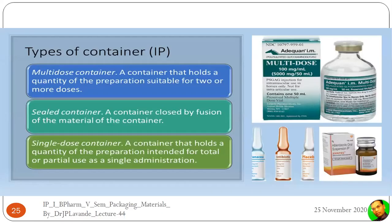The multiple dose container holds a quantity of preparation suitable for two or more doses — for example, injectable vials, where multiple injections can be given by inserting a needle through the closure, withdrawing the content, and injecting to the patient. The sealed container is closed by fusion of the container material, such as aluminum caps crimped at the neck of vials, which must be broken before use.